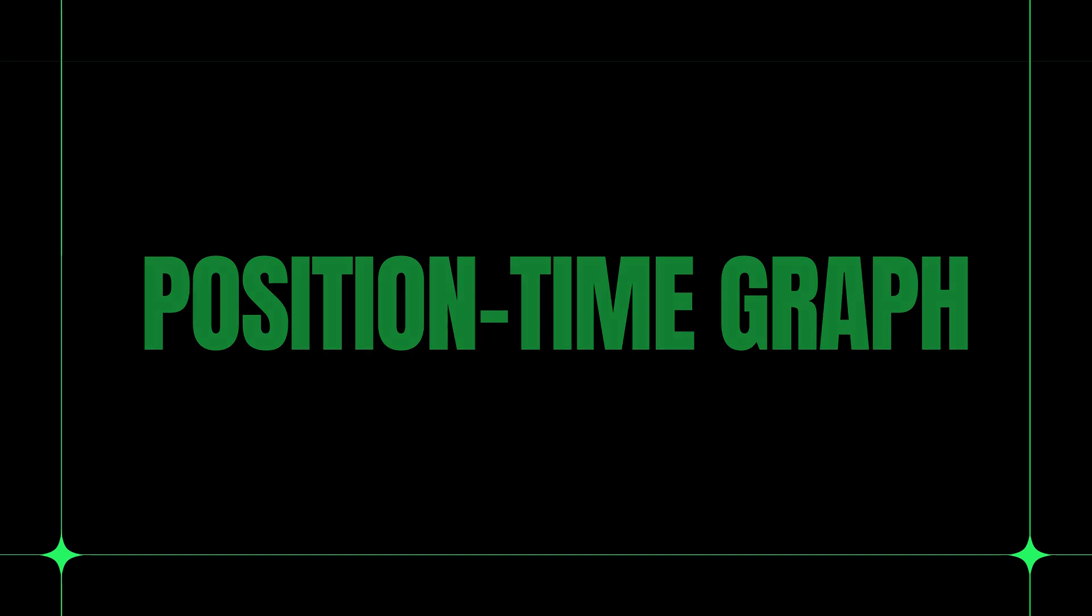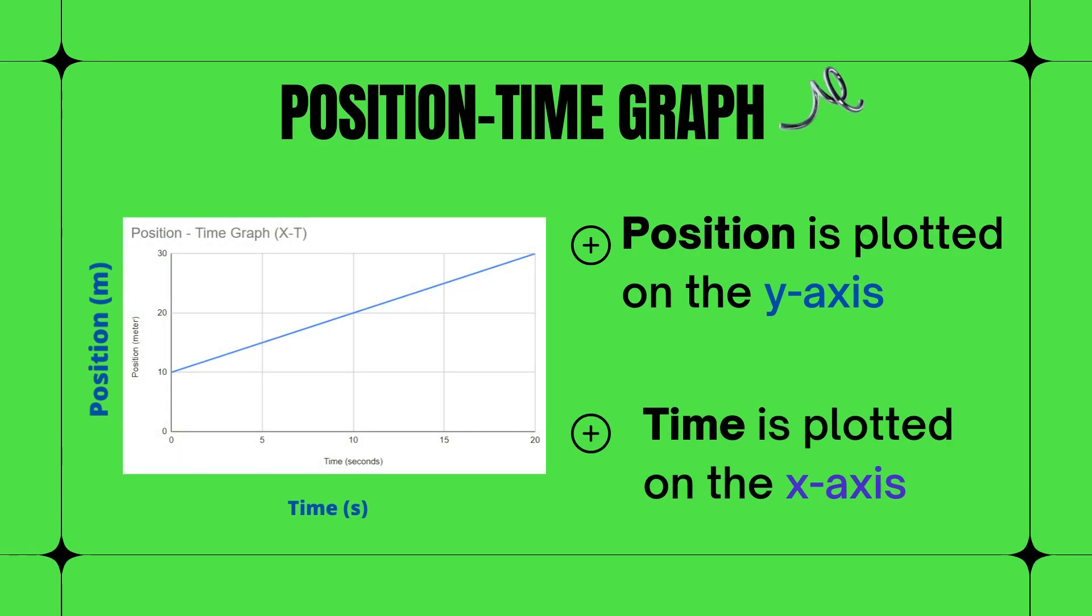Position time graph. This is an example of position time graph. We need to remember that position is plotted on the y-axis while time is plotted on the x-axis.